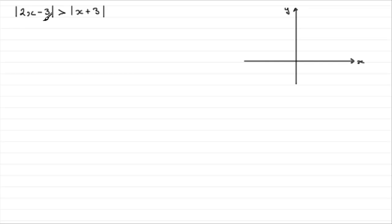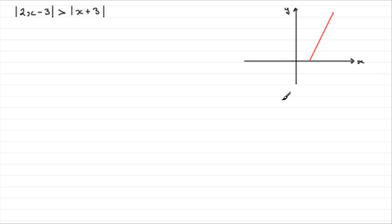We look at the graph of y equals 2x minus 3. This is a straight line graph — linear — with a gradient of 2 and a y-intercept of minus 3. It would be a line coming down through minus 3, but because we've got the mod around it, any negative values become positive. So the graph gets reflected back and comes up through plus 3.